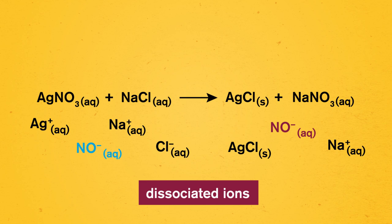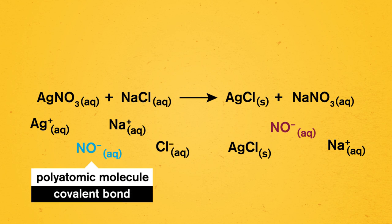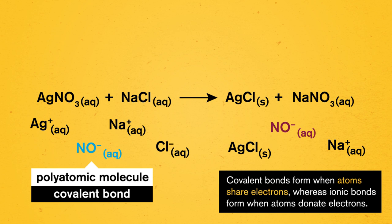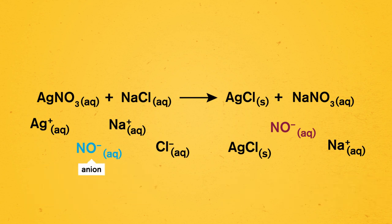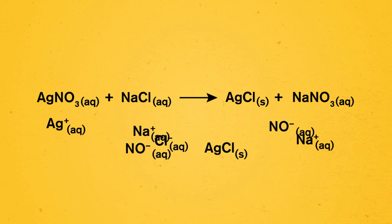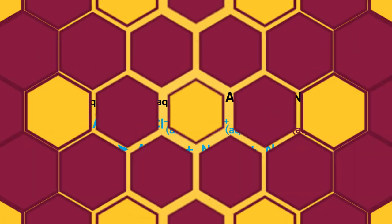We don't split nitrate up into nitrogen and oxygen, though. Nitrate is a polyatomic molecule that has a negative charge, but is made from covalent bonds instead of ionic ones. Covalent bonds form when atoms share electrons, whereas ionic bonds form when atoms donate electrons. Since nitrate is made of covalent bonds, its elements do not dissociate into ions, so we refer to the whole nitrate compound as an anion. If we line up these dissociated ions added together as reactants and products the same way we did for the molecular equation, we get our ionic equation. We can call this completed example step one to mastering our superpower.